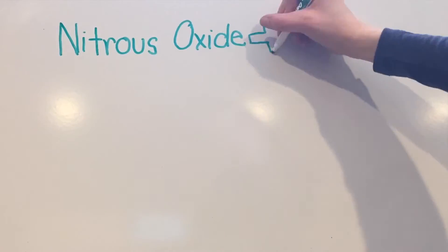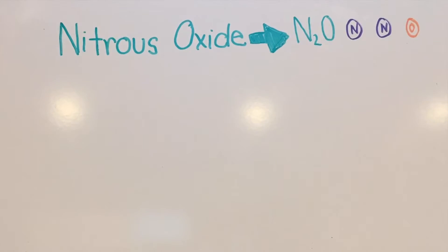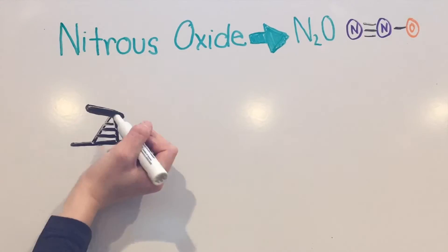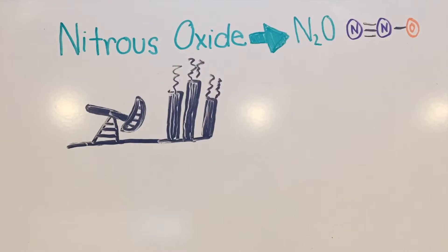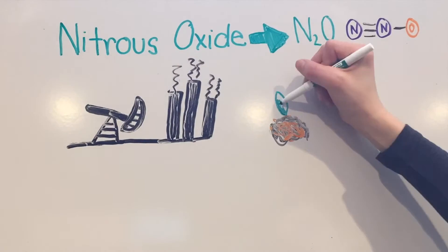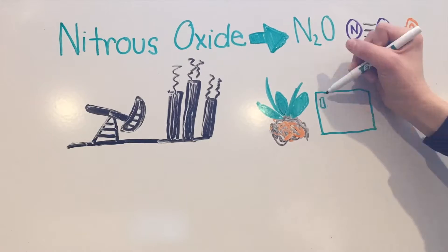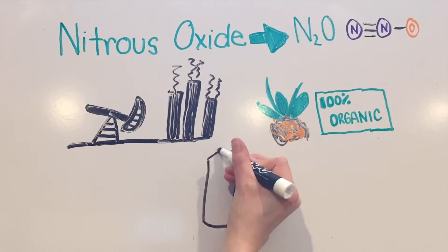Nitrous oxide, another greenhouse gas, is created naturally and artificially. Some sources include soil cultivation, organic fertilizers, consumption of fossil fuels, and the production of nitric acid.